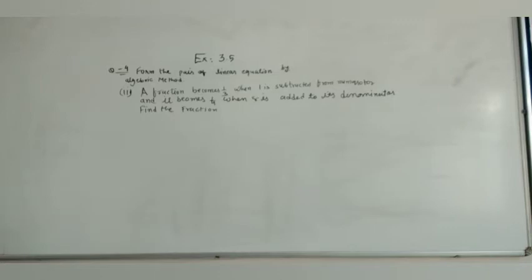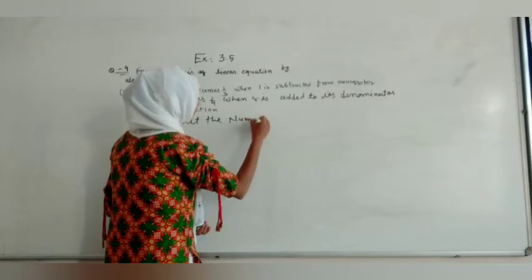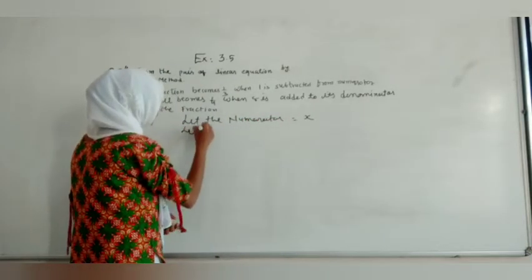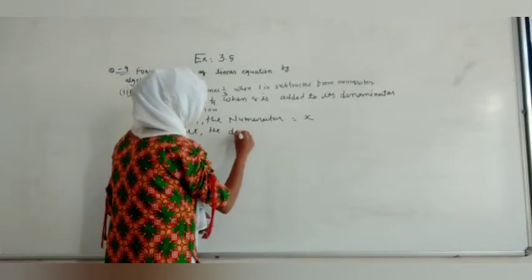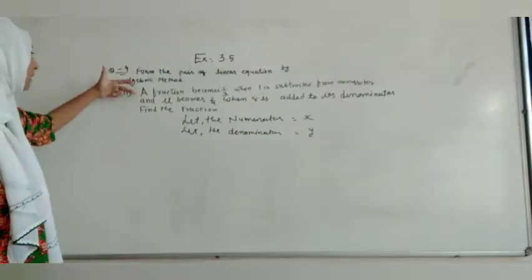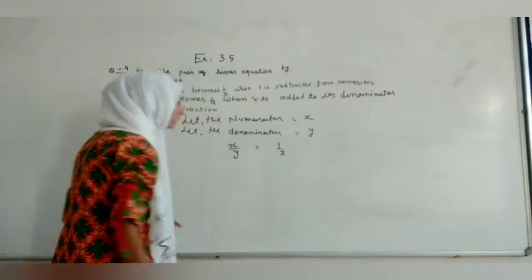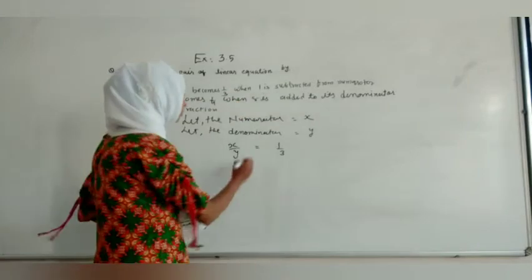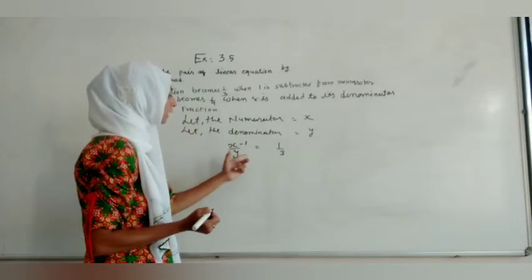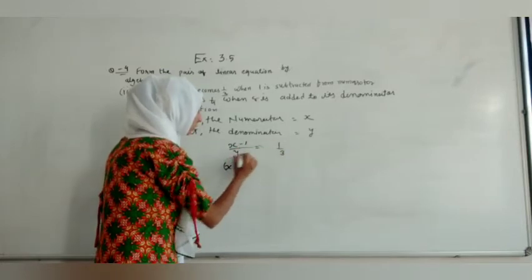Question number 2: the fraction becomes 1 upon 3 when 1 is subtracted from the numerator, and it becomes 1 upon 4 when 8 is added to its denominator. Find the fraction. We guess: let the numerator be X and the denominator be Y. Let us form the first equation from the statement that the fraction becomes 1/3 when 1 is subtracted from the numerator.